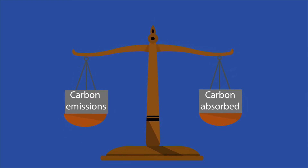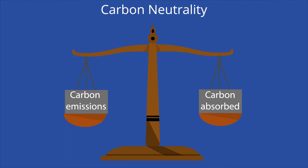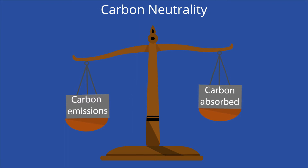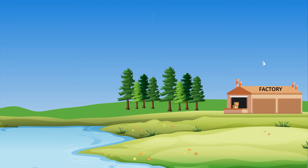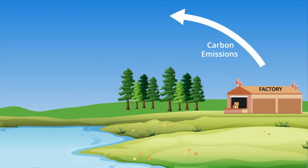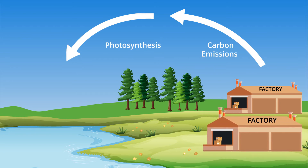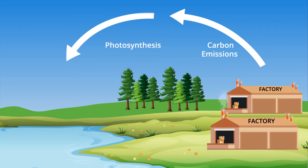This temperature increase will result in damaged ecosystems, rising ocean levels, and unusual and dangerous weather conditions. Carbon neutrality means achieving net zero carbon emissions, which is an equal balance between the amount of carbon emissions humans put into the atmosphere with the amount of carbon that is absorbed from the atmosphere. Carbon dioxide is a naturally occurring gas that is present in the earth's atmosphere, but it also acts as a greenhouse gas — a gas that exists in the atmosphere and traps heat.